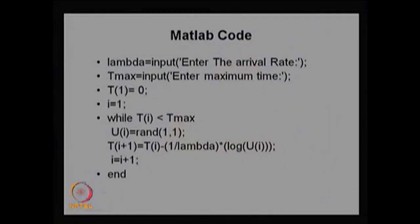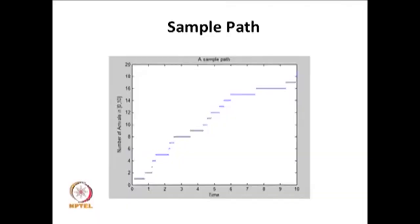I am going to explain how we can create the sample path of the Poisson process using MATLAB code. Since the Poisson process is related to inter-arrival times that are exponentially distributed, I can start with time 0 with no customer in the system and go up to the maximum time needed for the sample path. I keep generating random variables to produce exponentially distributed time events, then shift each time event T(i+1) by adding the next exponentially distributed time event, and then plot the sample path.